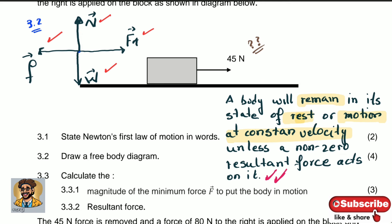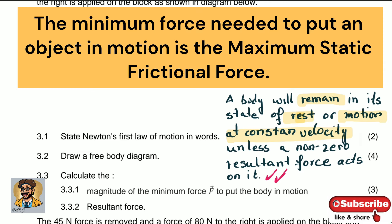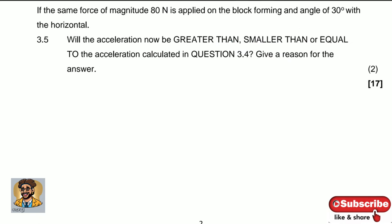Question 3.3: calculate the magnitude of the minimum force to put the body in motion. The minimum force needed to put a body in motion is the maximum static frictional force. The formula is: maximum static friction = μs × N. We don't have the normal force yet, so we need to calculate it first.